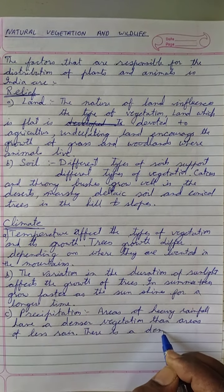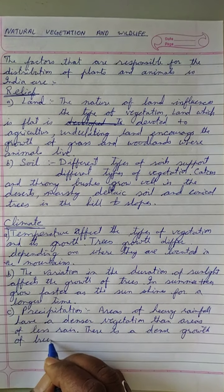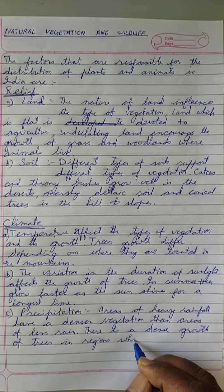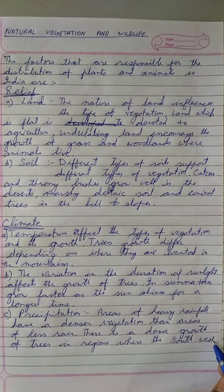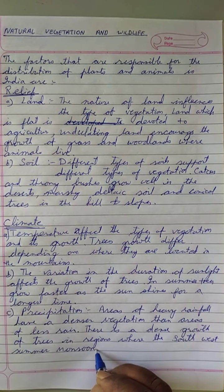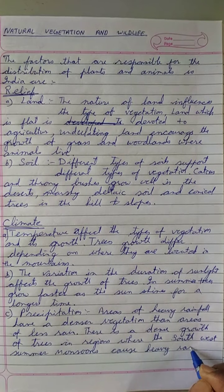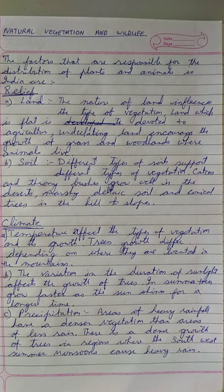There is a dense growth of trees in regions where the south-west summer monsoon blows. These are the winds that cause heavy rainfall in India. Due to this, more plants grow. So the Western Ghats are full of evergreen forests.